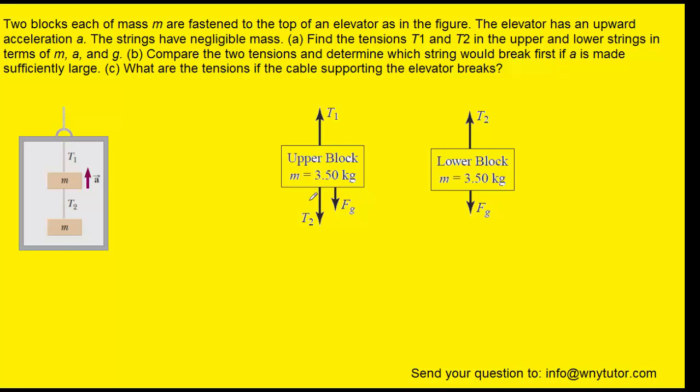It's important to note that the T2 in the free body diagram of the upper block is the same T2 in the free body diagram of the lower block, and that's because the rope that's connecting the two blocks is just one single rope. So whatever tension in the rope exists on the upper block would have to be the same tension that exists on the lower block because they are the same rope.